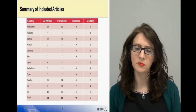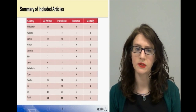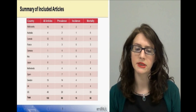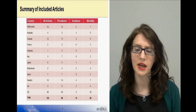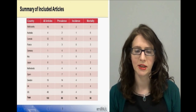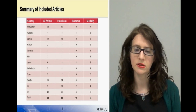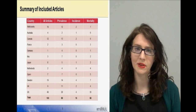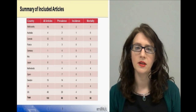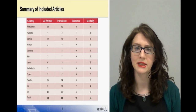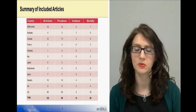The greatest number of relevant articles was identified for the US, Sweden and Canada, but there was sparse data for Germany, the Netherlands, France and Italy. 18 articles focused on prevalence of COPD, 15 reported incidence and 58 reported mortality associated with COPD.